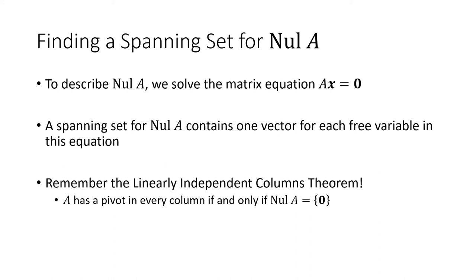To find a spanning set for the null space of A, we solve Ax = 0 and write the solution in parametric form, getting one vector in our spanning set for each free variable. Recalling the linearly independent columns theorem: if there's a pivot in every column, the only solution is x = 0, meaning the null space is just the zero vector, and vice versa. In the next lecture we'll talk about the other associated space to a matrix called the column space.